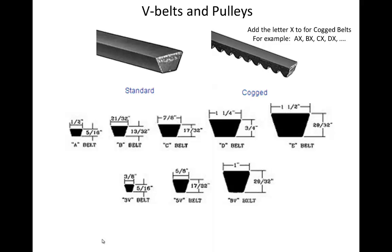In order to help the V-belt wrap around smaller pulleys and turn sharper corners, you can purchase cogged belts, or belts with grooves. These grooves are not designed to engage with teeth on the pulleys — they are just meant to help the V-belt be more flexible. If you want to purchase a cogged V-belt, you would simply put an X after the size, for instance AX, BX, CX, DX, etc.